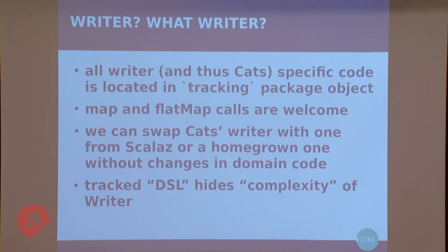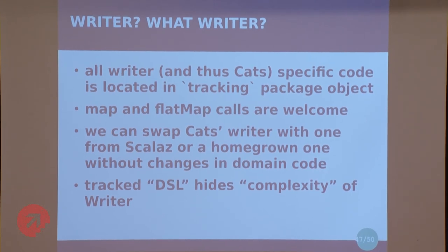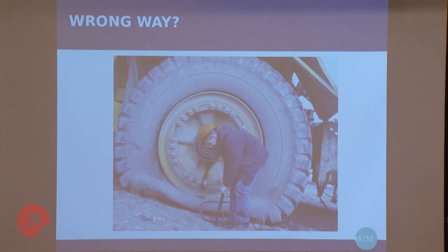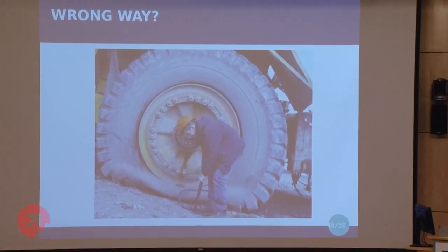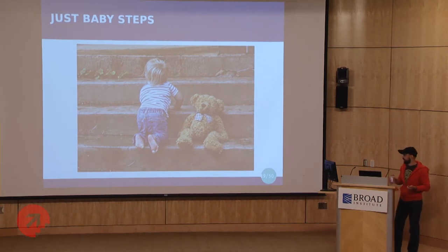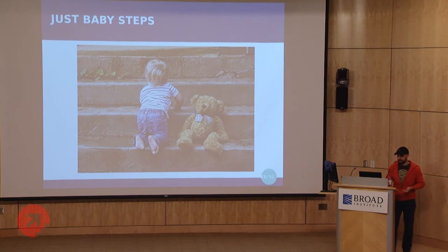Also, one team member mentioned: if we want to replace Cats with ScalaZ for some reason, or write our own thing, we just change the tracking package — that's the only place we need to change, and all our domain code works as-is. So eventually we got this tracked DSL, or whatever you call it, which hides the complexity of Writer. Someone might say you're doing it wrong — those are abstractions and you need to use them, not hide them. But I strongly believe in a baby-steps mantra. I think this is just a first step toward better code, and this is how you can try to sell it to the enterprise.